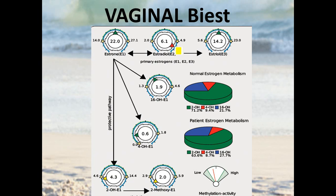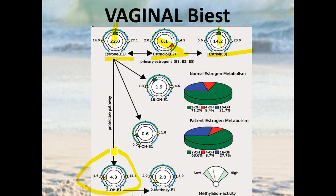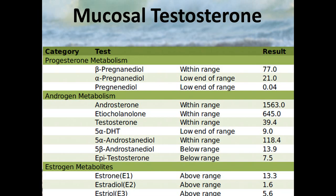Here is a second patient taking biestrogen, but in a one-to-one ratio rather than four-to-one, so they're getting a heftier dose of estradiol. Estrone is right in the middle of the range, estriol is also right in the middle. Looking at the metabolites, estrone is normal, estradiol is high, and estriol is normal. We'd expect to see at least normal metabolite levels if it's appropriately metabolized. Notably, the so-called good estrogen metabolite — 2-hydroxyestrone — is below range. So this patient is not pushing estrogen down the 2-hydroxy pathway as desired. You might consider concurrently giving DIM or indole-3-carbinol to help that along.